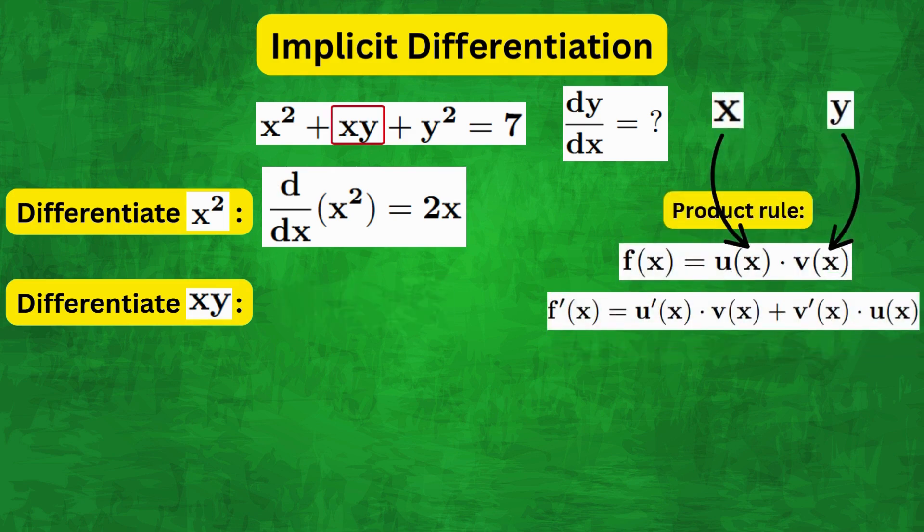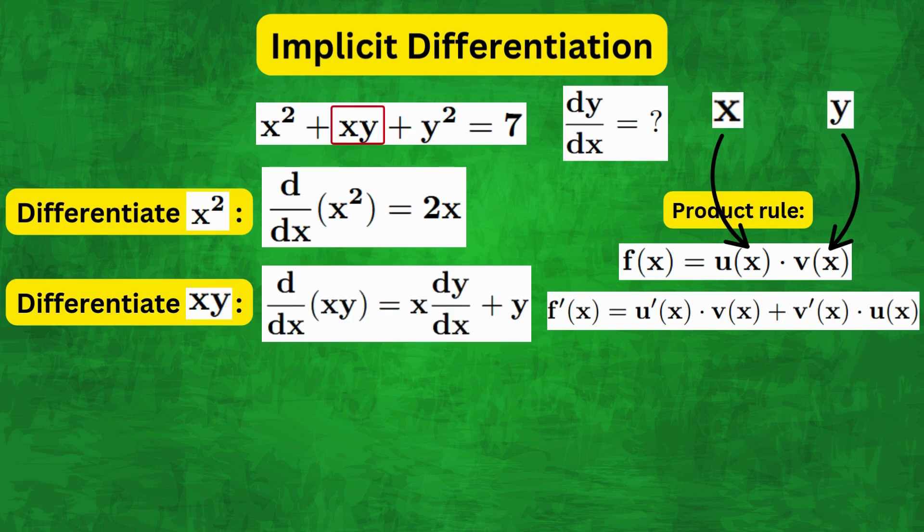And therefore, we get the derivative of xy as x times dy by dx plus y times derivative of x, which is equal to 1.